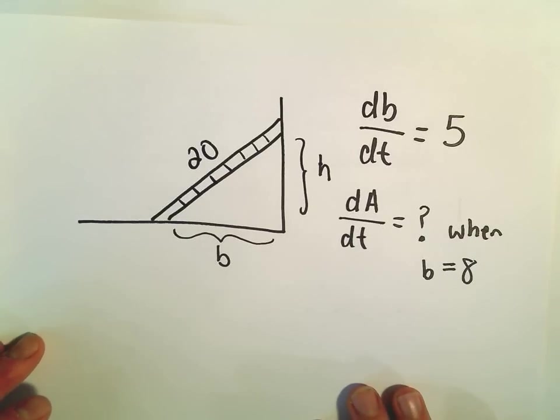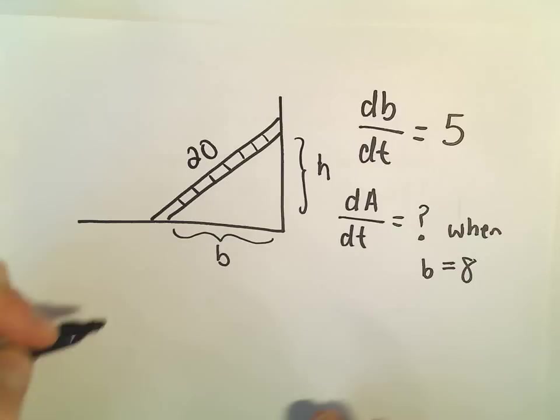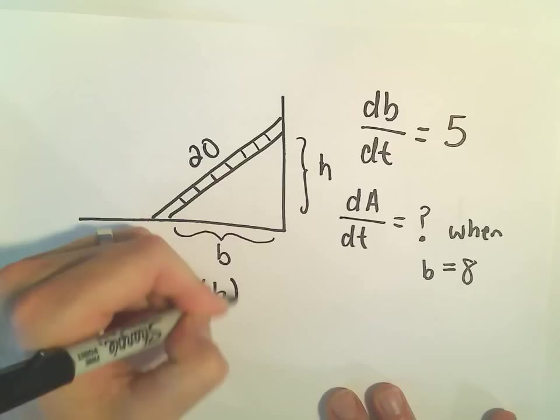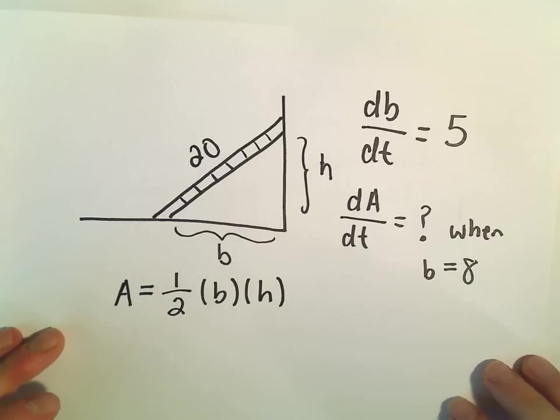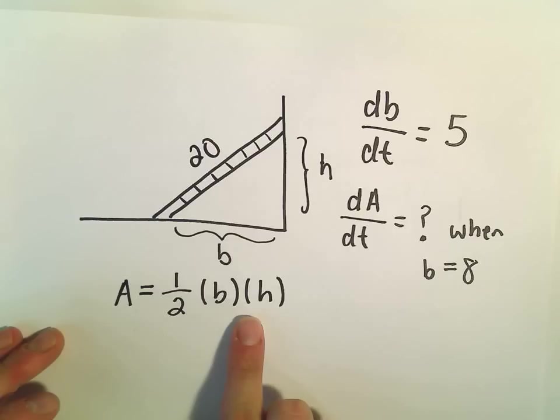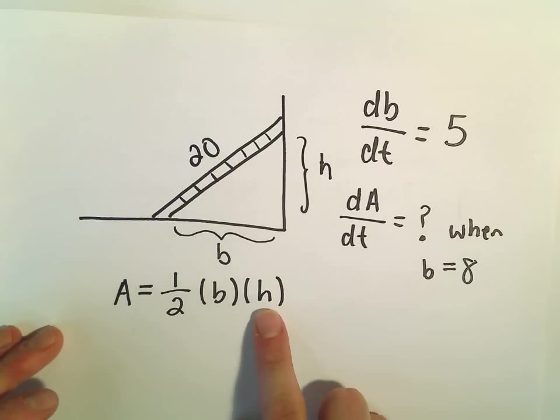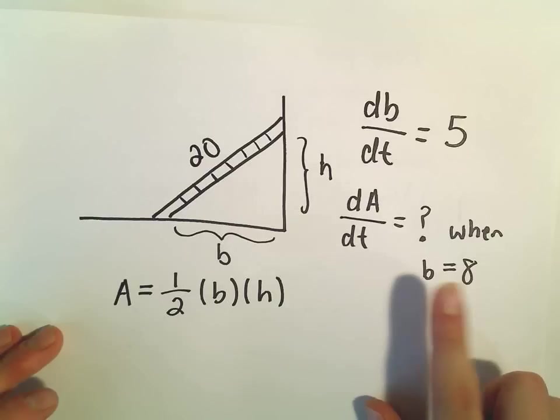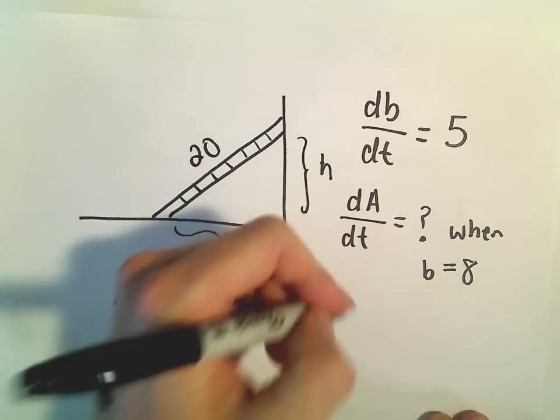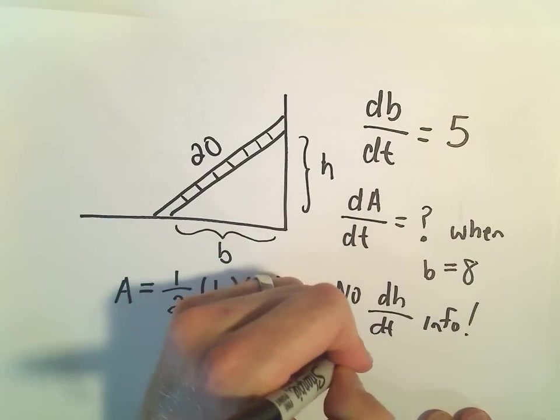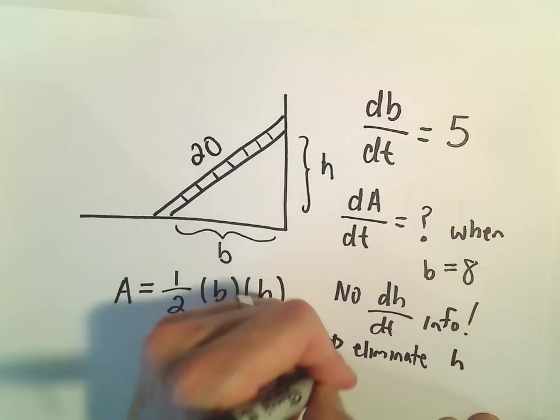The first thing I'm going to do is think about what's the area of this triangle generically. The area of a triangle is just one-half its base times its height. Now if we started taking a derivative immediately using the product rule and implicit differentiation, we would end up getting a db/dt which is great, and a dA/dt which is fine - that's what we're looking for. But notice we would get a dh/dt as well, and there's no dh/dt information. So to me, since there's no dh/dt information, that tells me to try to eliminate the h from the equation.